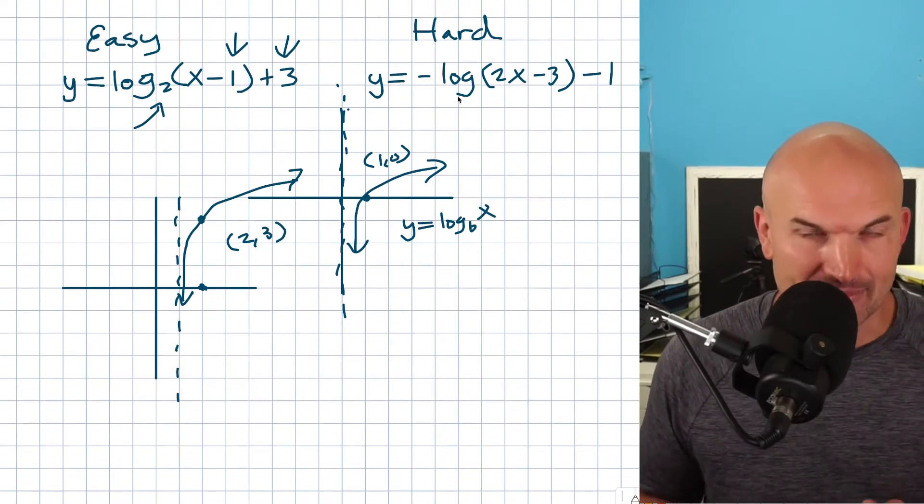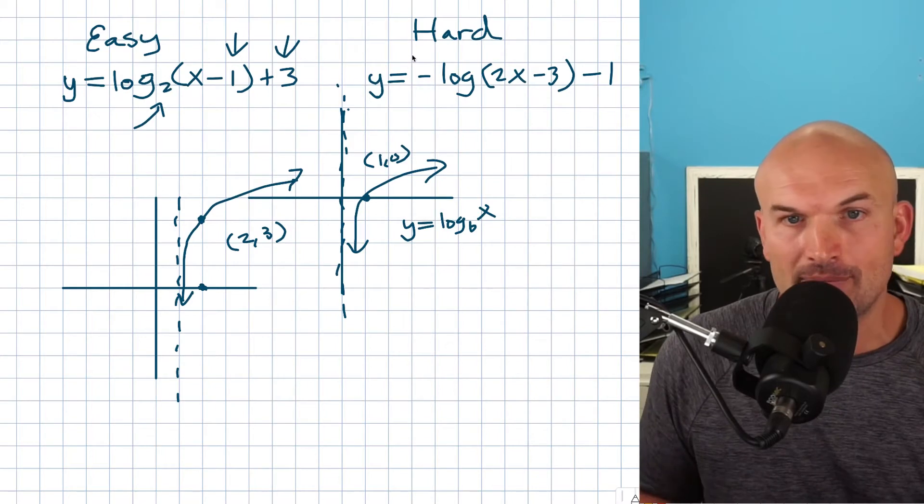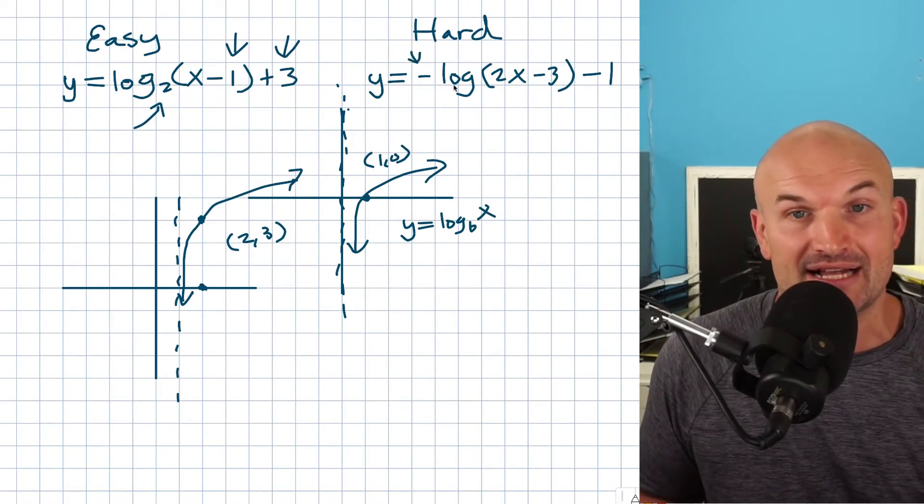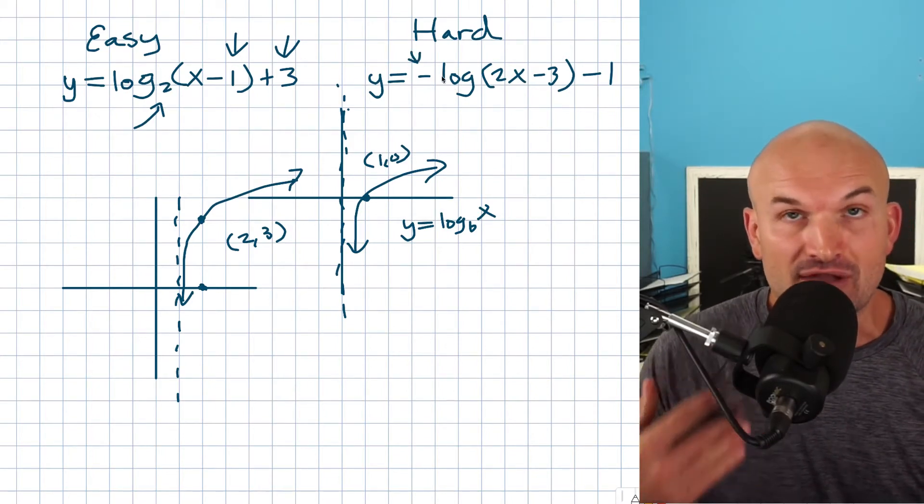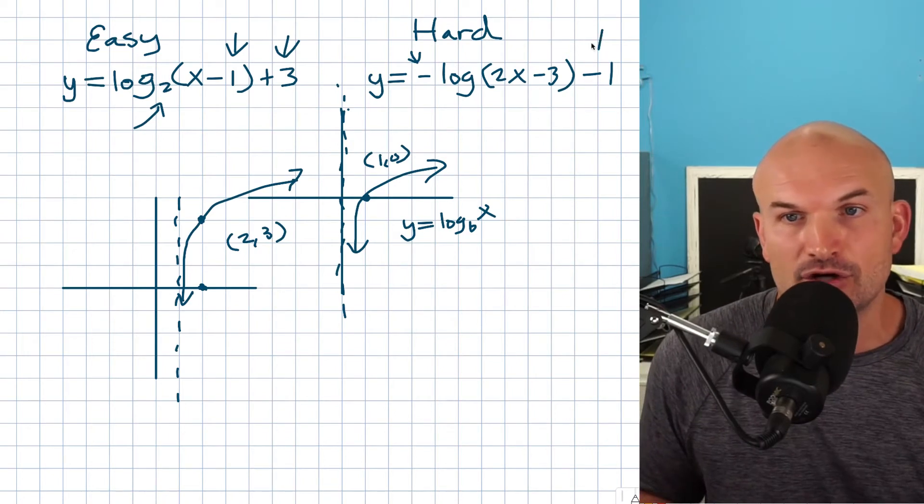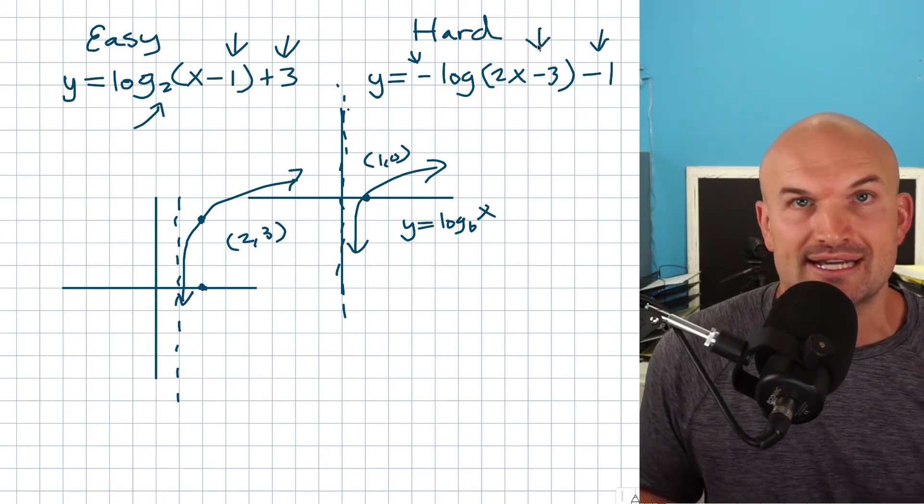All right, now let's take a look at this hard example. Now why is this example so hard? Well, basically we have this multiplying by negative on the outside, which is actually going to be a reflection about the x axis. We have another vertical transformation and now we have a horizontal transformation.